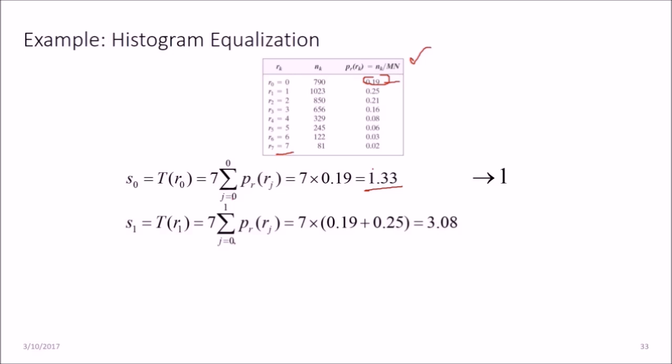Next is we multiply 7 by sigma j equals 0 to 1. This was 0 to 0, now we have two values 0 to 1. So what we are going to do is this p_r(r_j) will include 0.19 and 0.25, so we are taking a cumulative frequency.